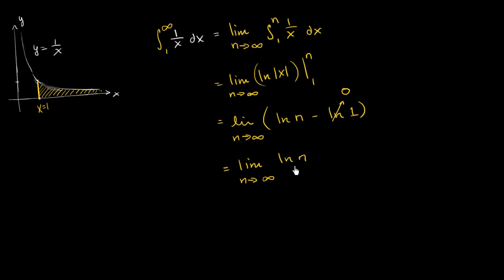Now this is interesting. Natural log function just keeps getting larger and larger. The natural log function looks something like this, keeps growing and growing, albeit at a slower and slower pace, but it keeps growing. The limit as n approaches infinity of the natural log of n is just equal to infinity.